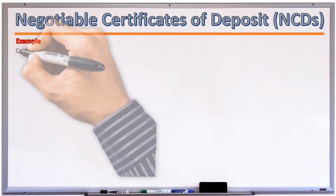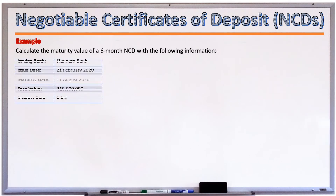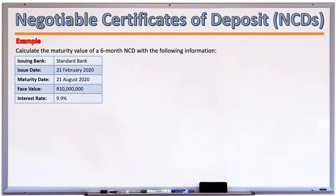Example: Let's calculate the maturity value of a 6-month NCD given the following information. This information would usually be conveyed in a term sheet, which would have the following important terms and conditions: the issuing bank is Standard Bank; issue date is 21 February 2020; maturity date is 21 August 2020; face value is 10 million rand; and the interest rate is 9.9%.